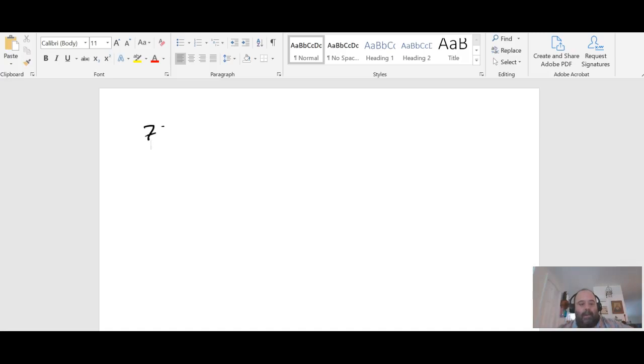All right, so let's look at number 72, the next one I want to look at here. This gives me 27 to the 2x is equal to 9 to the x minus 3. So both of these are powers of 3.